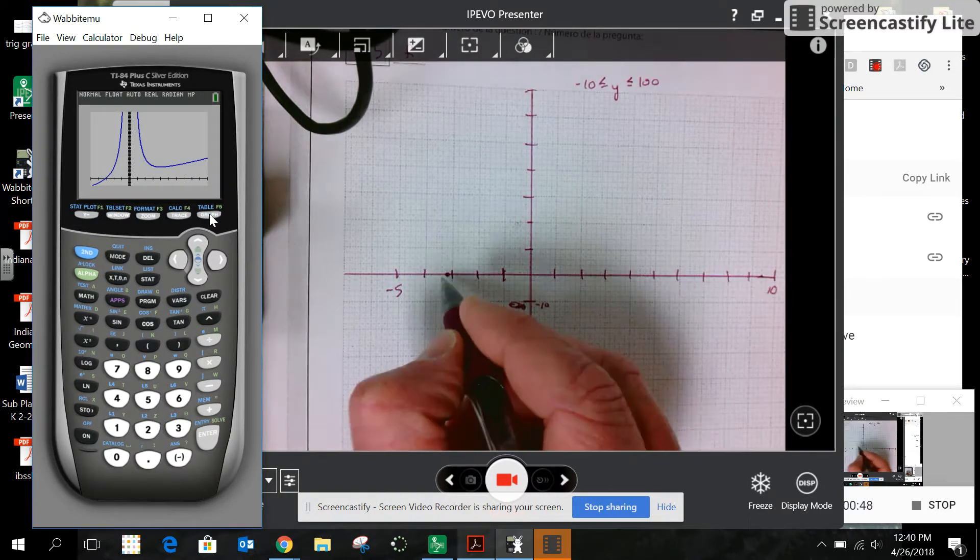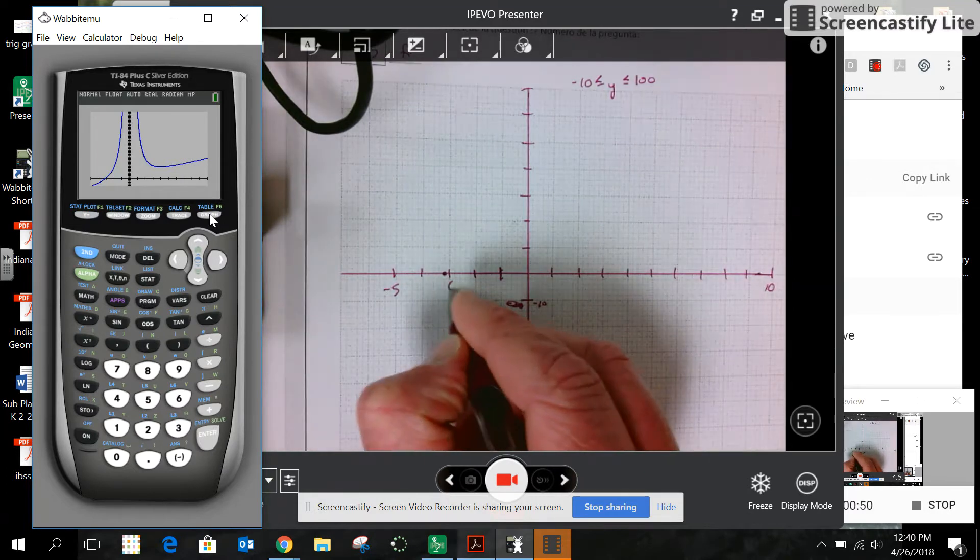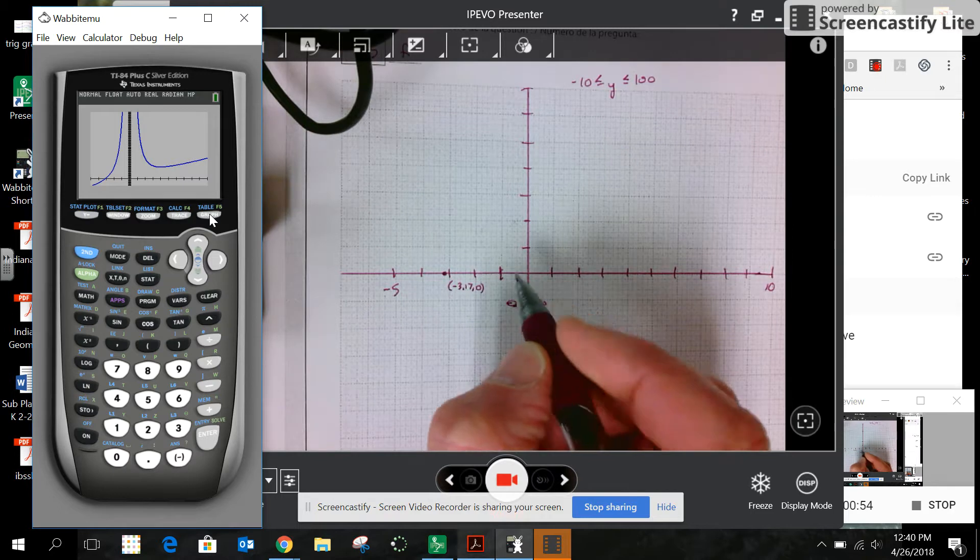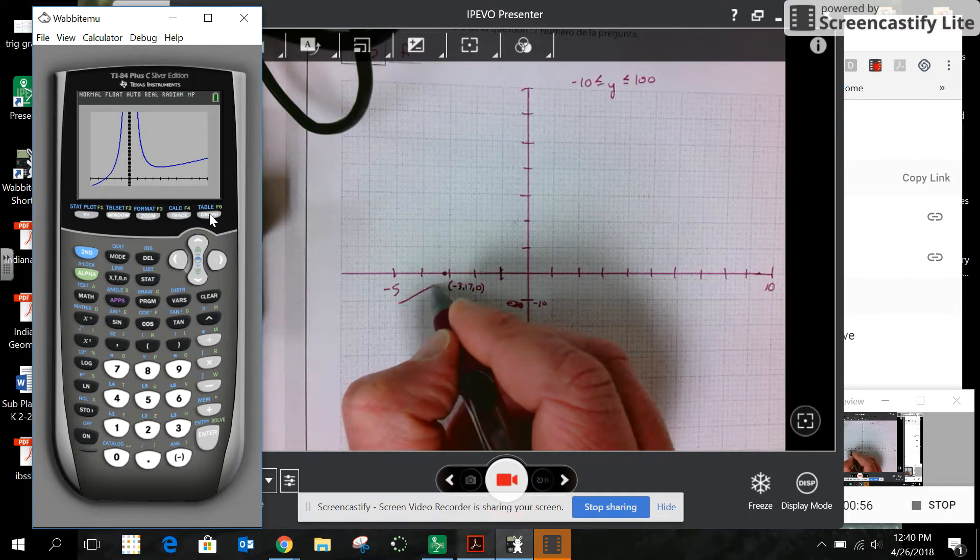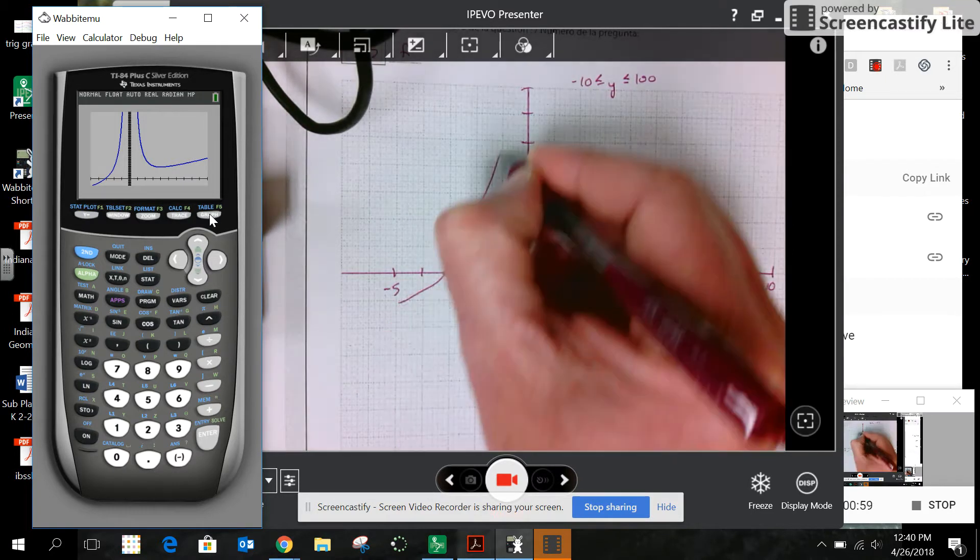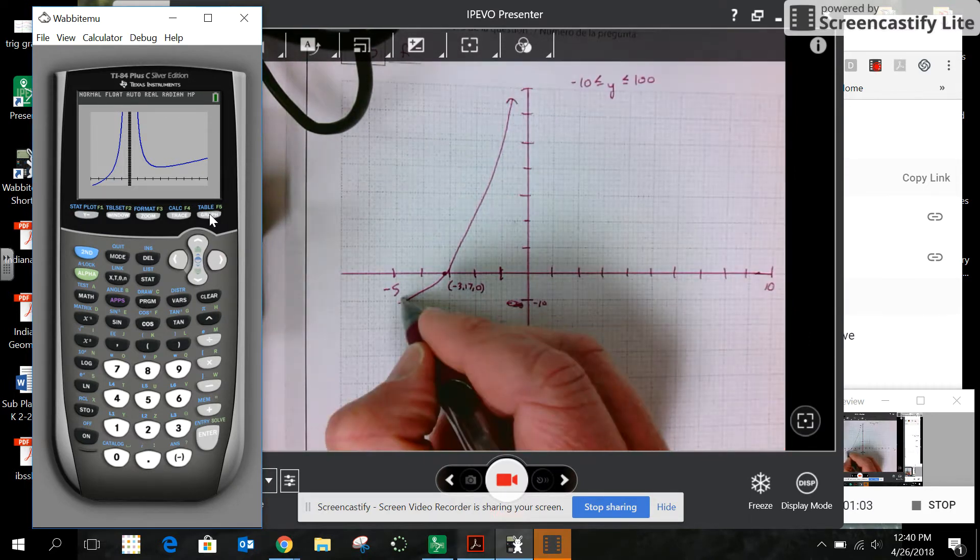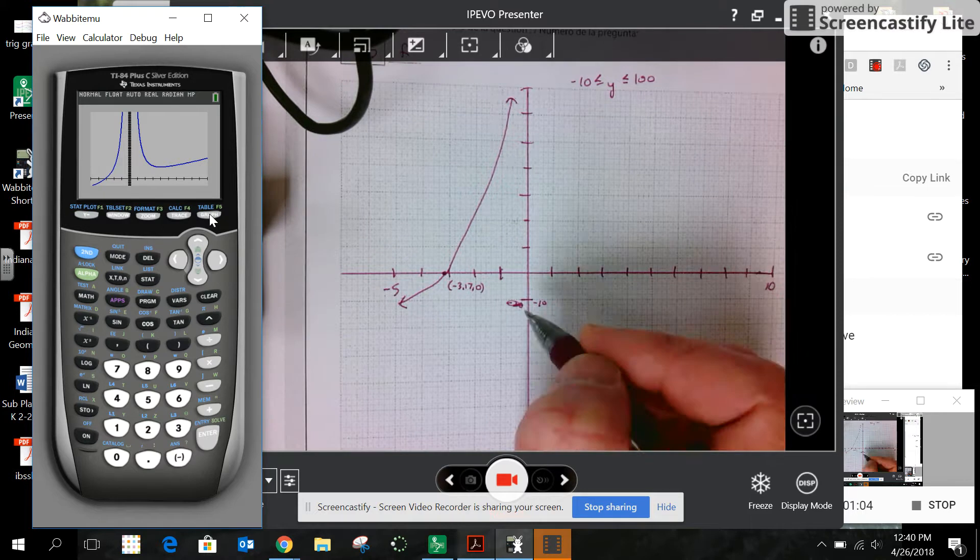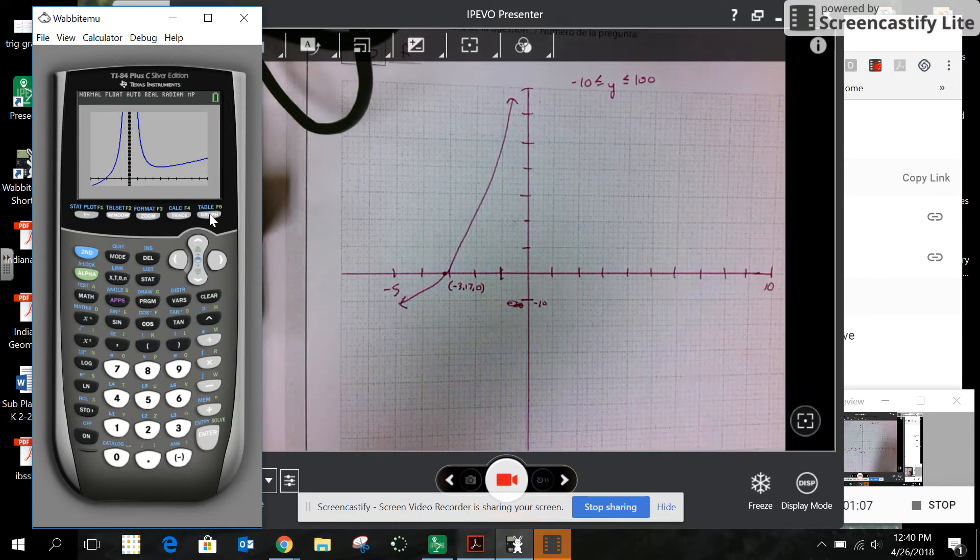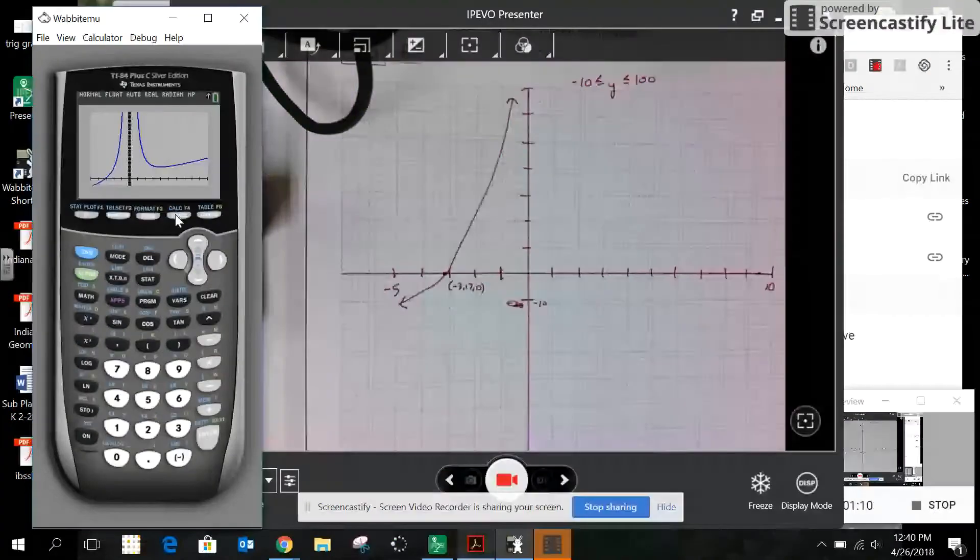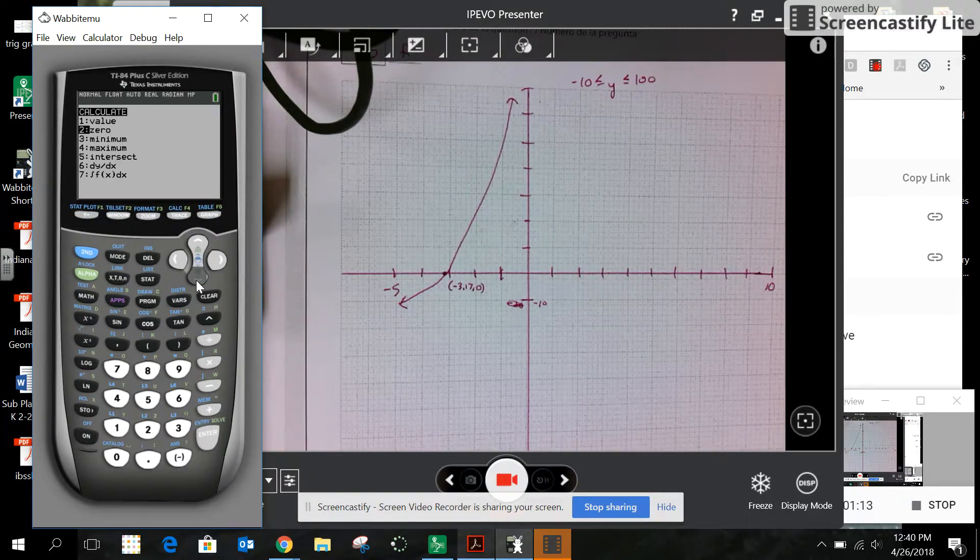I need to have that intercept point negative 3.17, 0. I want to make sure that's labeled and I'm just gonna make a nice easy sketch. Make sure it's not straight like I used the straight edge, so it's going like this and then it's coming down.